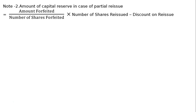Amount to be transferred to Capital Reserve in case of partial reissue: Amount forfeited upon number of shares forfeited into number of shares reissued, minus discount on reissue. Forfeited value = 20 × 5 = Rs.100. So: (100/20) × 15 − discount on reissue (15 × 1) = 75 − 15 = Rs.60.